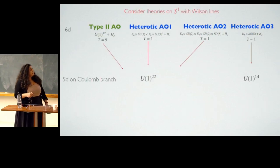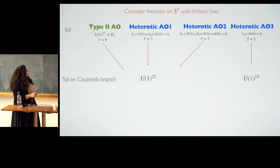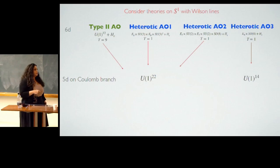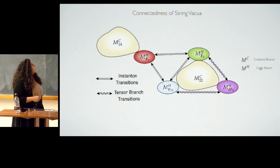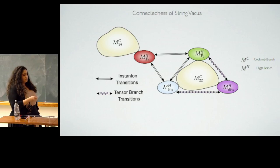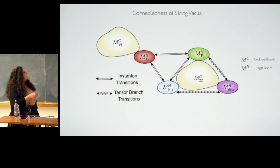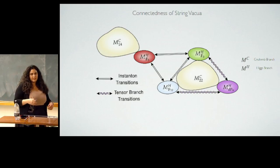The connection between theories works one dimension lower. I needed them to be part of a moduli space, so all these theories give you a 5D Coulomb branch with U(1) to the 22. Turning on Wilson lines to get rid of charged matter, you have U(1) to the 14. This shows the connectedness of the string vacua — the Coulomb branch is related to the Higgs branches of the F0, F12, and DP9 models, related through instanton tensor-branch transitions, showing they're all part of a single moduli space in the lower-dimensional theory.